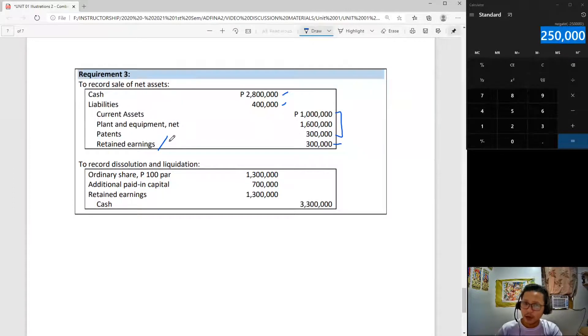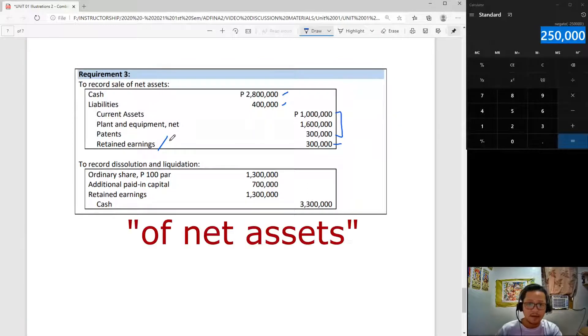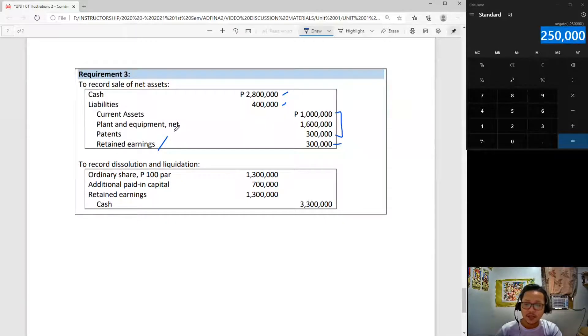There is a credit to retained earnings of 300,000. This retained earnings credit is actually gain or loss on sale of assets. This is the total net effect of the sale made by Granger. How do we compute that? Simple - what was received minus the book value of the net assets given up.